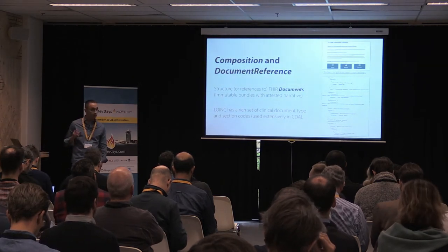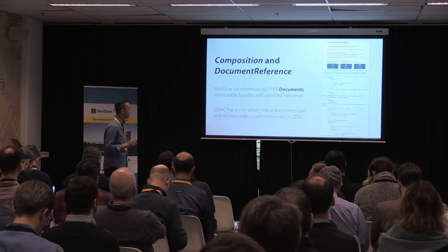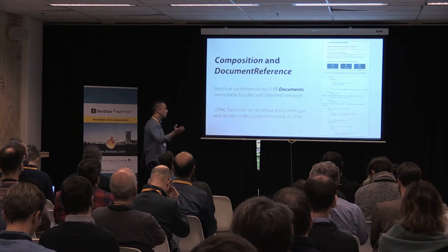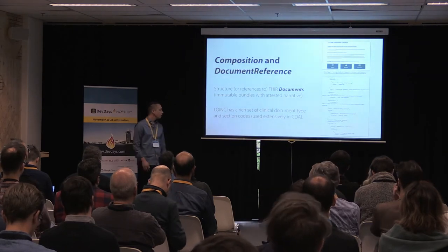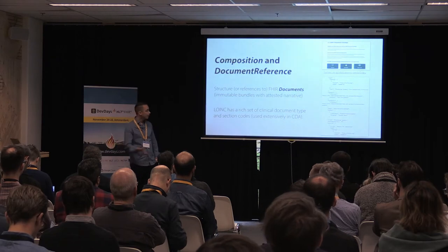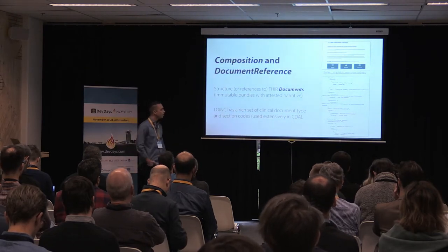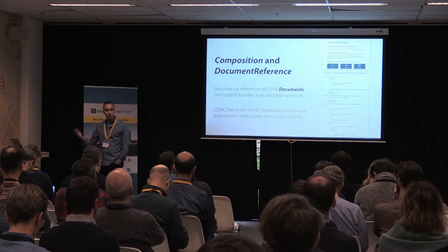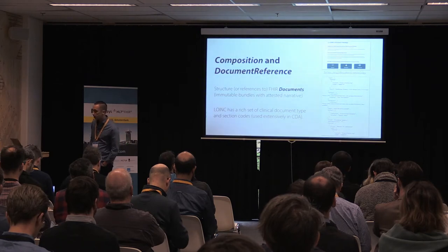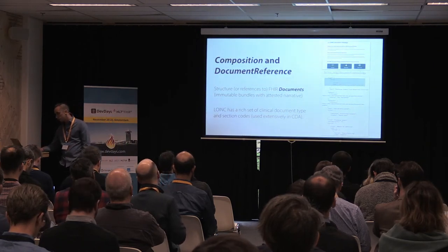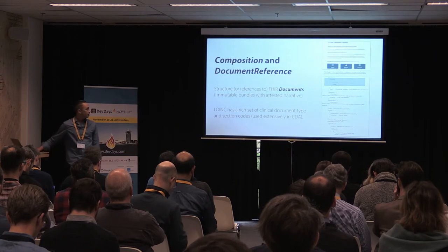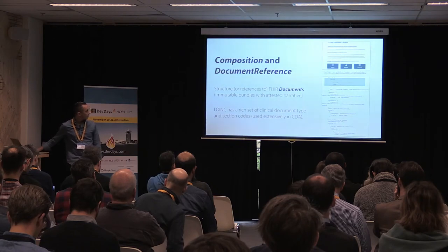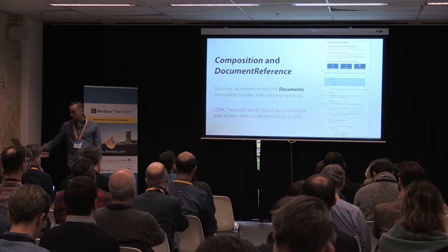Composition and document reference is another place where you might want to use LOINC codes. For those familiar with CDA, LOINC is used widely for identifying different document types, and it serves a similar purpose in FHIR. The set of codes around clinical notes, progress notes, and discharge summaries are pretty widely used. In these resources, LOINC serves as a way to identify the particular kind of document that's contained or referred to.